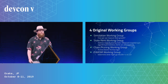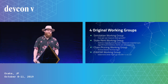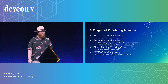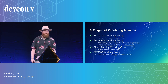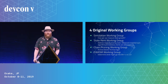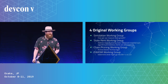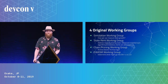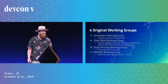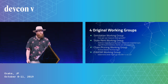From that meeting in Prague, we came up with four working groups: the simulation working group, the state rent working group, the chain pruning working group, and the eWASM working group. The simulation working group was put together to understand how state bloat is affecting Ethereum — coming up with graphs, figures, and numbers to help us understand more.